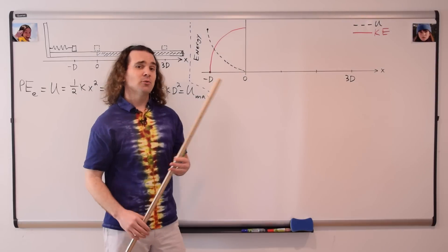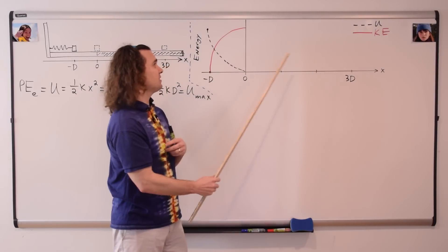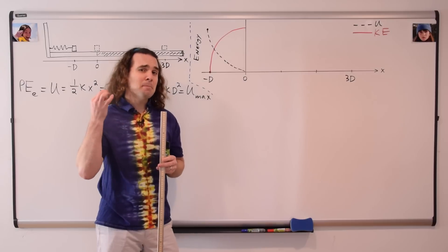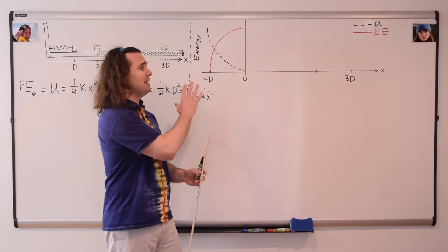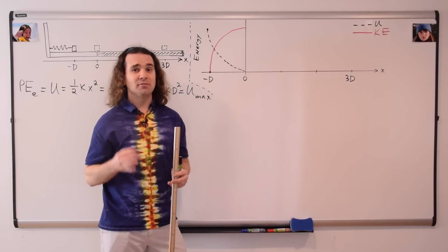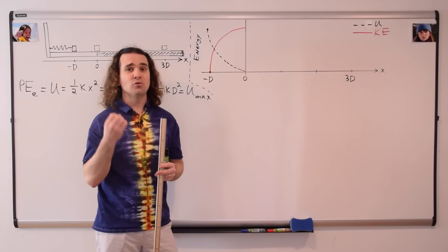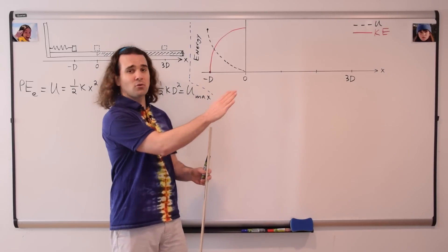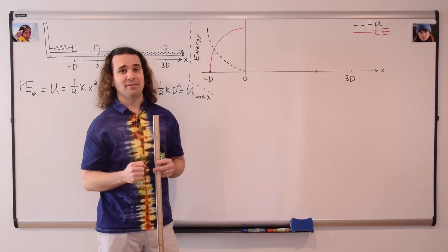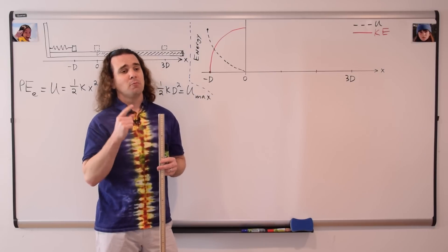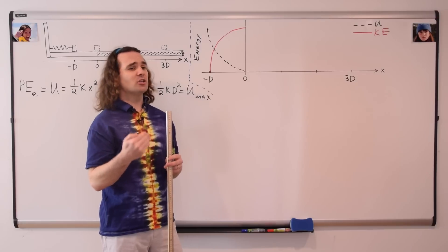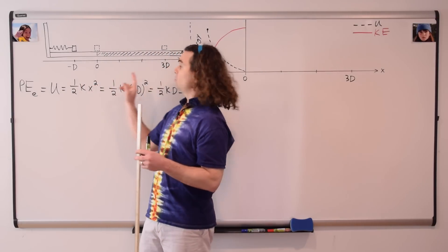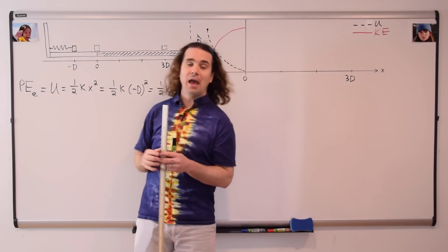Make sure you include a legend to identify which line goes with which type of energy, and remember, your graph is a part of your answer — your solution to the problem on the AP test. So please be very careful when drawing the lines on your graphs. Billy, what happens to the energies of the block as it moves from the equilibrium position to 3 capital D?